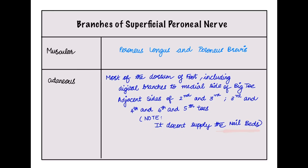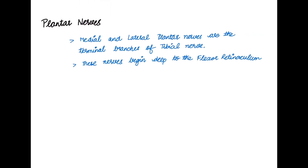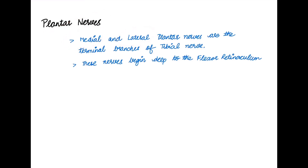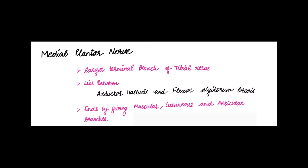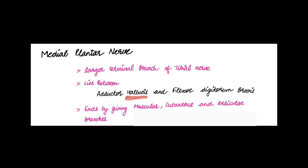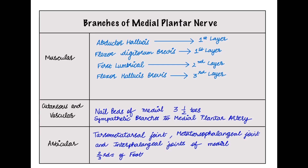The plantar nerves are the terminal branches of the tibial nerve. There are two: the medial plantar nerve and the lateral plantar nerve. Both begin deep to the flexor retinoculum of the ankle joint. The medial plantar nerve is the larger one; it lies between the abductor hallucis and flexor digitorum brevis, and ends by giving muscular, cutaneous, and articular branches.